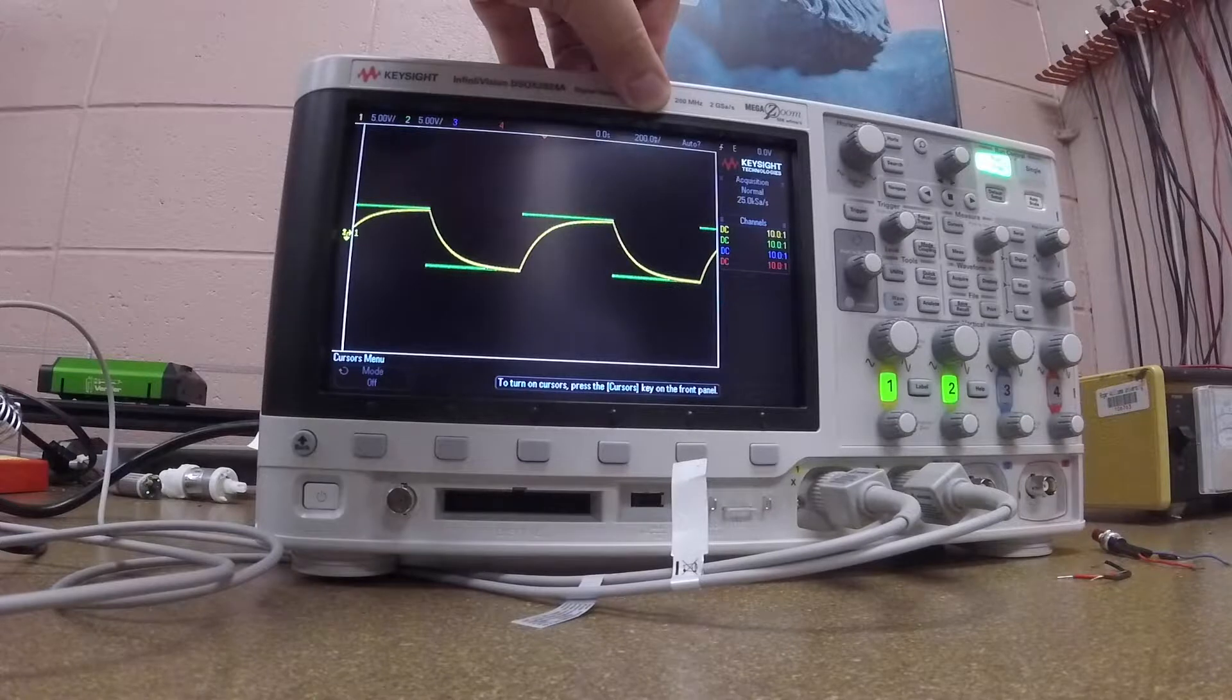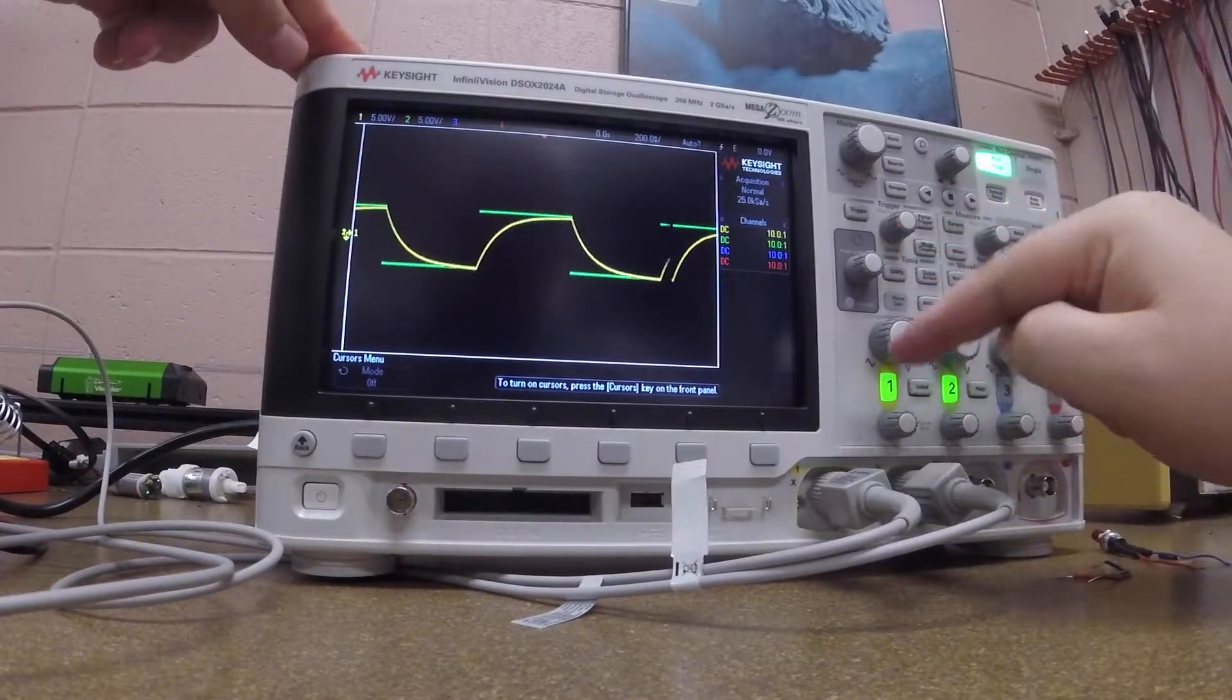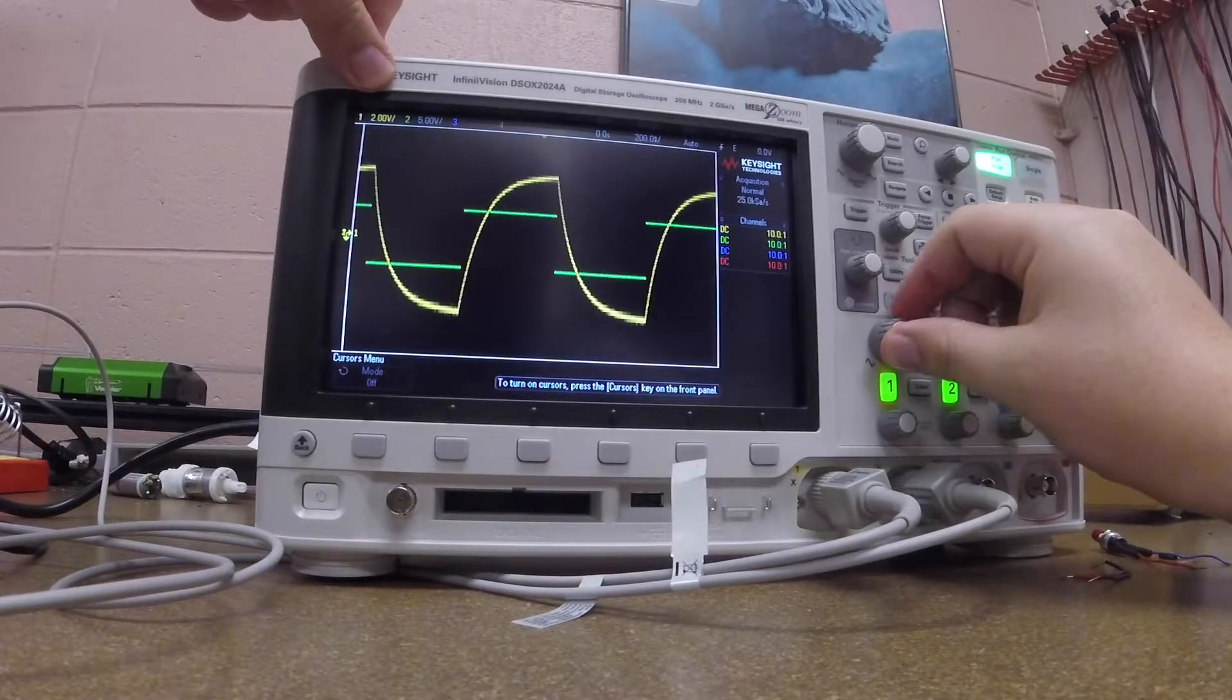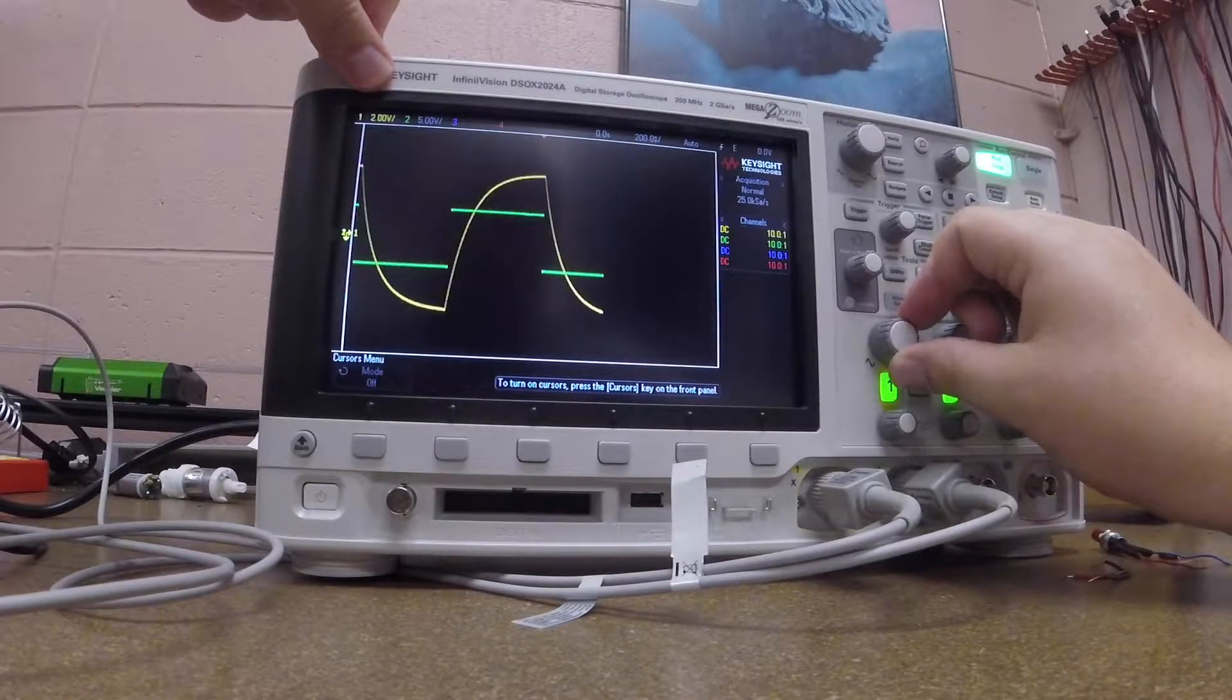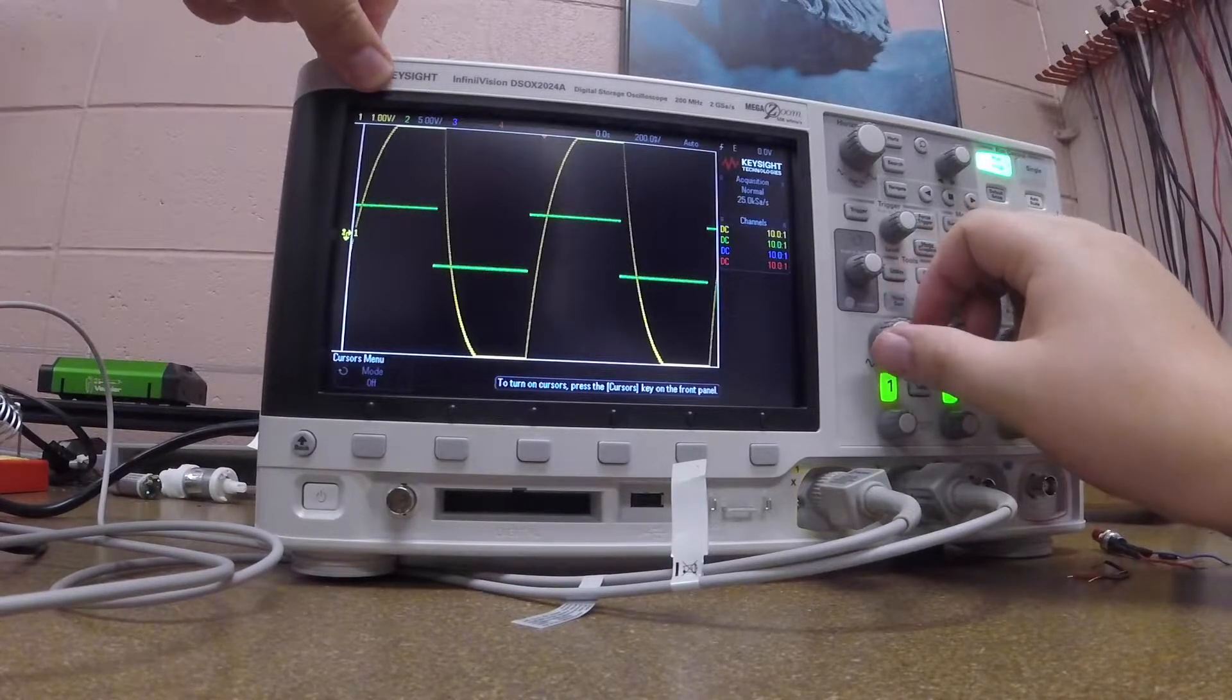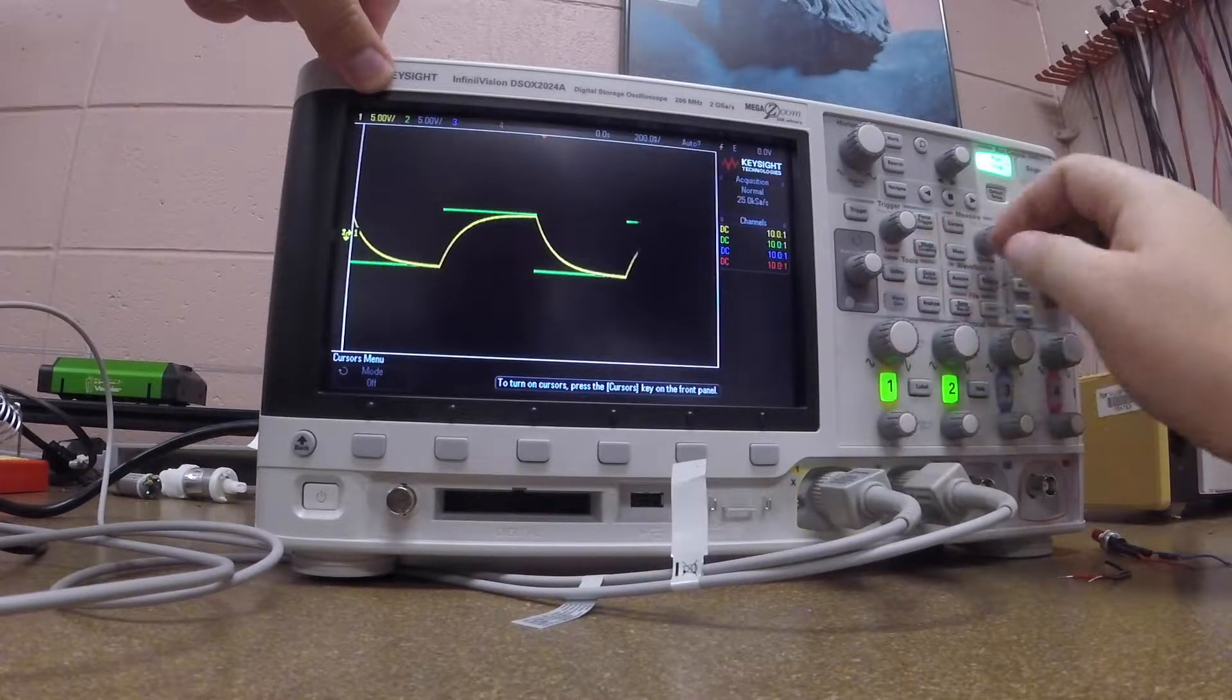If I want to change the way that the voltages are displayed, I can go to the channel. The first channel here is currently at 5 volts and I can use the knob down here to change the value of the voltage per division. Doing this increases it to 2, going even further goes to 1. I can crank it the other way, that'll give me 10 volts, 5 volts.